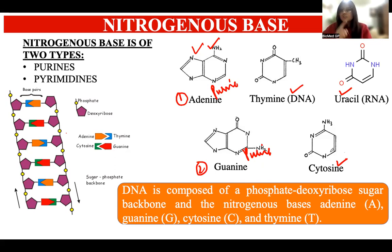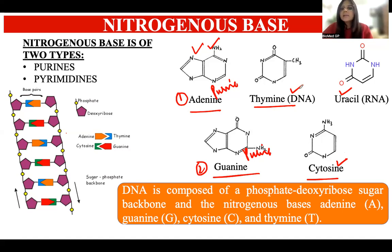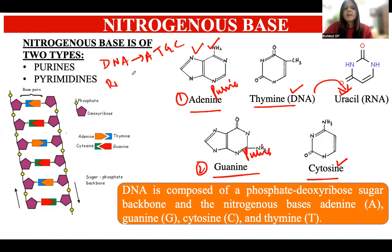Now, which nitrogenous bases are present in DNA and which are in RNA? In DNA, we have adenine, thymine, guanine, and cytosine. In RNA, instead of thymine, there is uracil — so RNA has adenine, uracil, guanine, and cytosine.